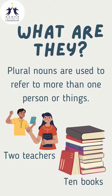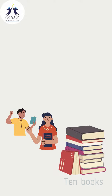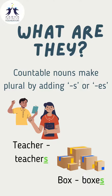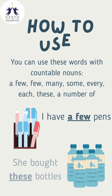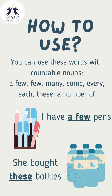For example, two teachers or ten books. Countable nouns make plurals by adding -s or -es at the end, for example teacher becomes teachers and box becomes boxes. We can often use these words with countable nouns, for example: I have a few pens, or she bought these bottles.